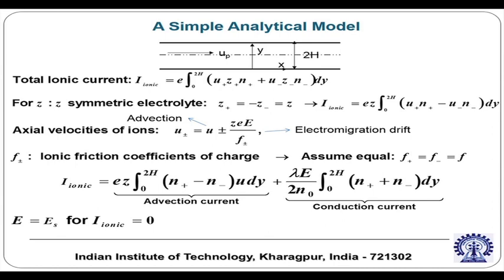To establish the basic principle: in the absence of any applied electric field, the E by which the ions are moving is the streaming potential spontaneously induced across the channel. Setting E equal to ES and the ionic current equal to zero — because no net electric field is applied, the advection current should be balanced by the conduction current due to electromigration. Solving this equation gives an expression for E, which in our case is the streaming potential.